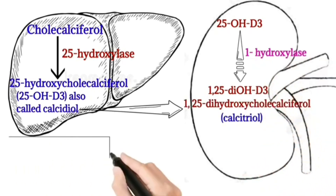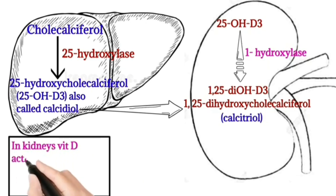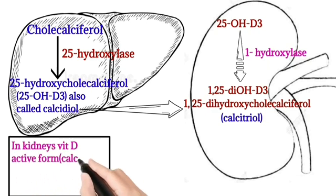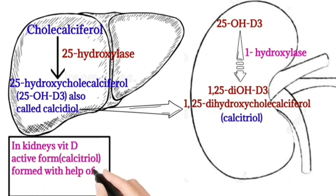In the kidney, 25-hydroxycholecalciferol is then converted into 1,25-dihydroxycholecalciferol by the enzyme 1-hydroxylase. This final active form of Vitamin D is known as calcitriol.